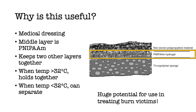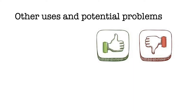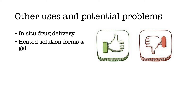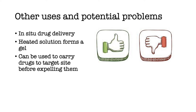This could be revolutionary for treating burn victims and providing a three-layer skin graft which will indicate itself when it's ready to be removed. Poly-N-isopropylacrylamide has other potential uses in medicine too — for example, in providing in-situ drug delivery due to its reversible gel-like properties. This means the polymer can change from a solution to a gel and vice versa, making it useful for carrying a drug which will be soluble in one form and not the other.